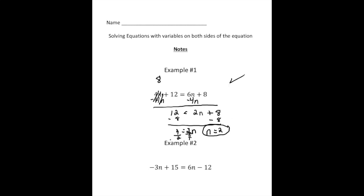All right, let's try this next one. So we have negative 3n plus 15 equals 6n minus 12. I'm going to add 3n to both sides. So 15 equals 9n minus 12.